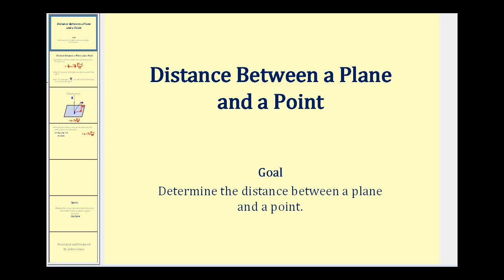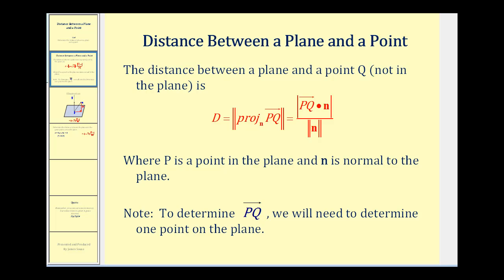Welcome to a lesson on how to determine the distance between a plane and a point not on the plane. The distance between a plane and a point Q, not on the plane, is equal to the magnitude of the projection of vector PQ onto the normal vector N. This is equal to the absolute value of vector PQ dotted with the normal vector, divided by the magnitude of the normal vector, where P is a point in the plane and N is a normal vector. One thing we do have to remember is that to determine the vector PQ, we will have to determine at least one point on the plane.